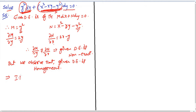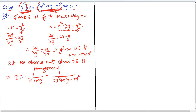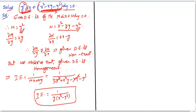For a homogeneous equation, the integrating factor is 1/(Mx + Ny). Computing Mx + Ny: M·x = xy², and multiplying each term of N by y gives x²y - xy² - y³. The first term xy² and the third term -xy² cancel, leaving x²y - y³, which factors as y(x² - y²). So the integrating factor is 1/[y(x² - y²)].